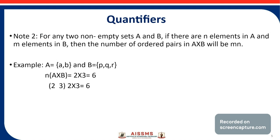So n(A × B), the number of elements in A cross B, equals the number of elements in A — which is 2 — times the number of elements in B — which is 3. So 2 × 3 = 6.